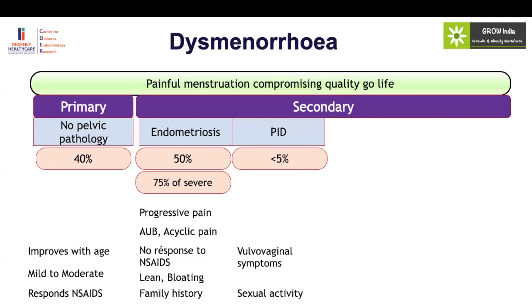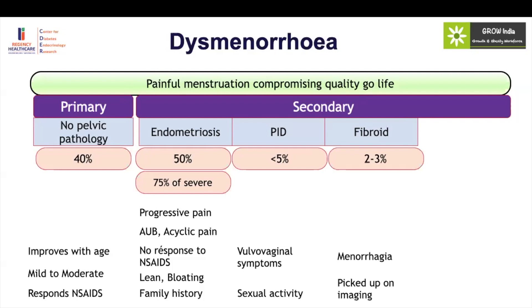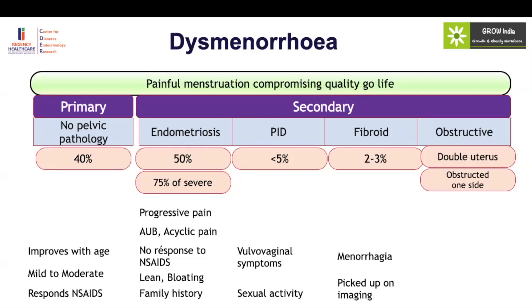Definitely, with girls now becoming sexually active, we also see pelvic inflammatory disease as a cause of dysmenorrhea — these girls generally have vulvovaginal symptoms. Fibroids are also present but in contrast to adults, the frequency is very low — only about two to three percent of cases of dysmenorrhea with associated menorrhagia have fibroid uterus, usually picked up on imaging. Obstructive dysmenorrhea is one of the rarest causes but should be kept in mind in the adolescent age group, especially if they have a double uterine system obstructed on one side. The key pointer to this kind of dysmenorrhea is an absent ipsilateral kidney — so if a person with a single kidney presents with a pelvic mass and severe dysmenorrhea, always rule out a double uterine system with an obstructed unilateral side.